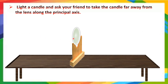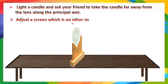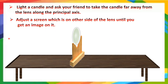The candle is to the right of the lens. On the left side, I hold a screen and adjust it to get a clear image. I bring the screen slowly towards the lens from the other side until I get the image. In this case, the object is almost at infinity — far away from the lens.